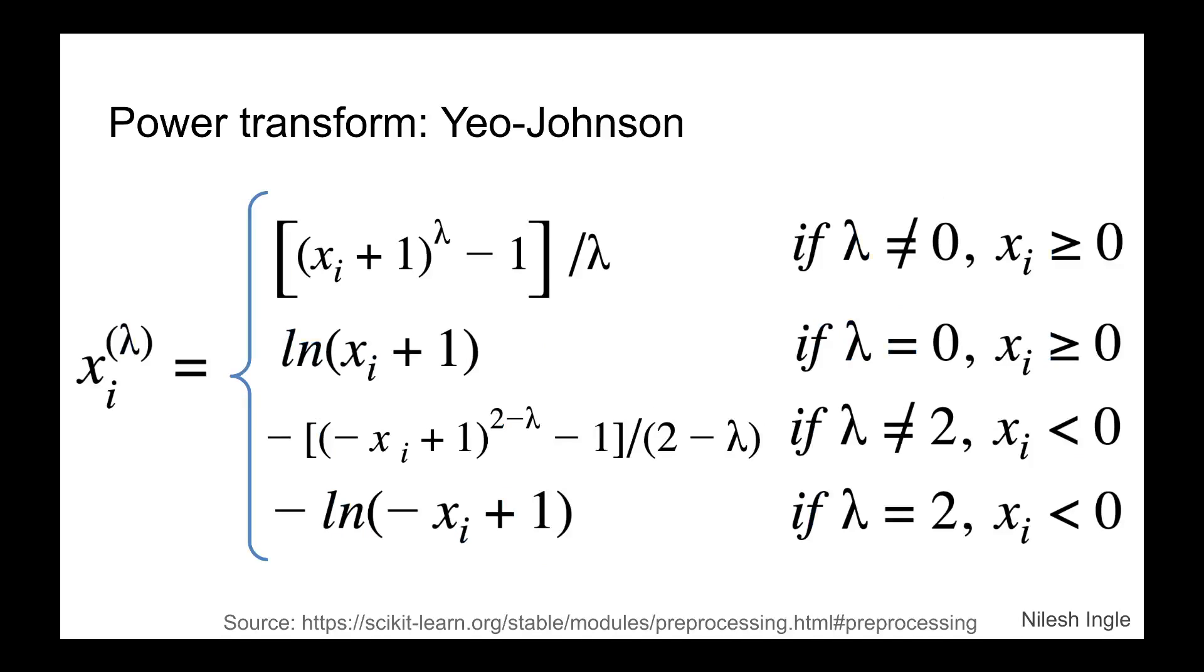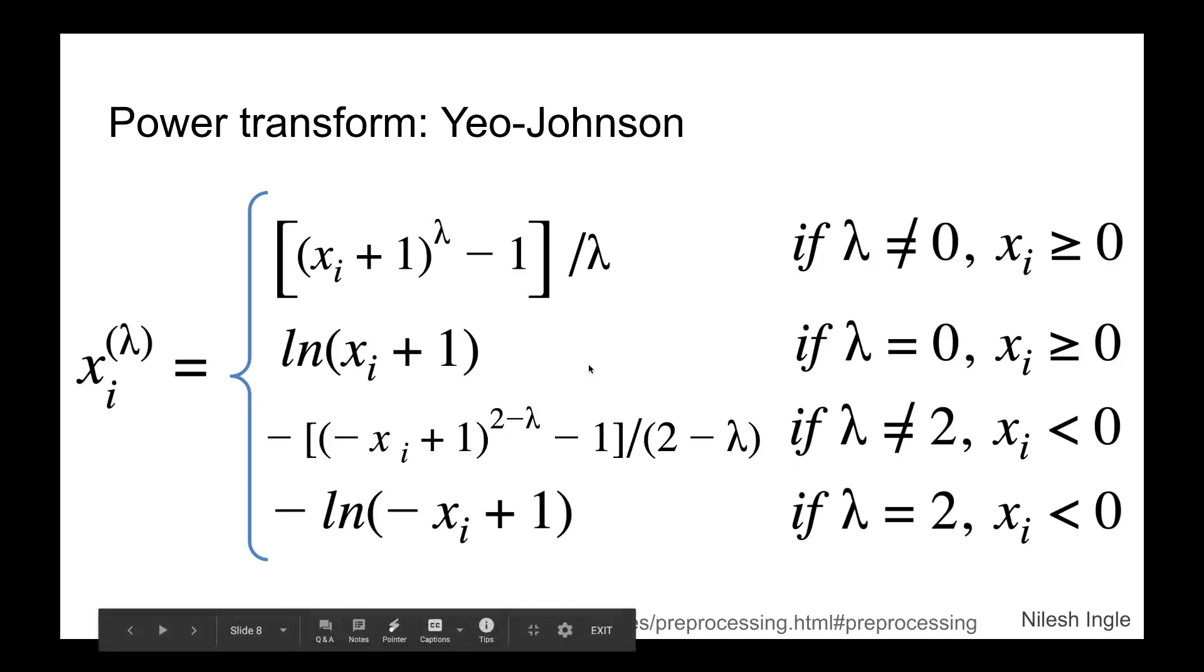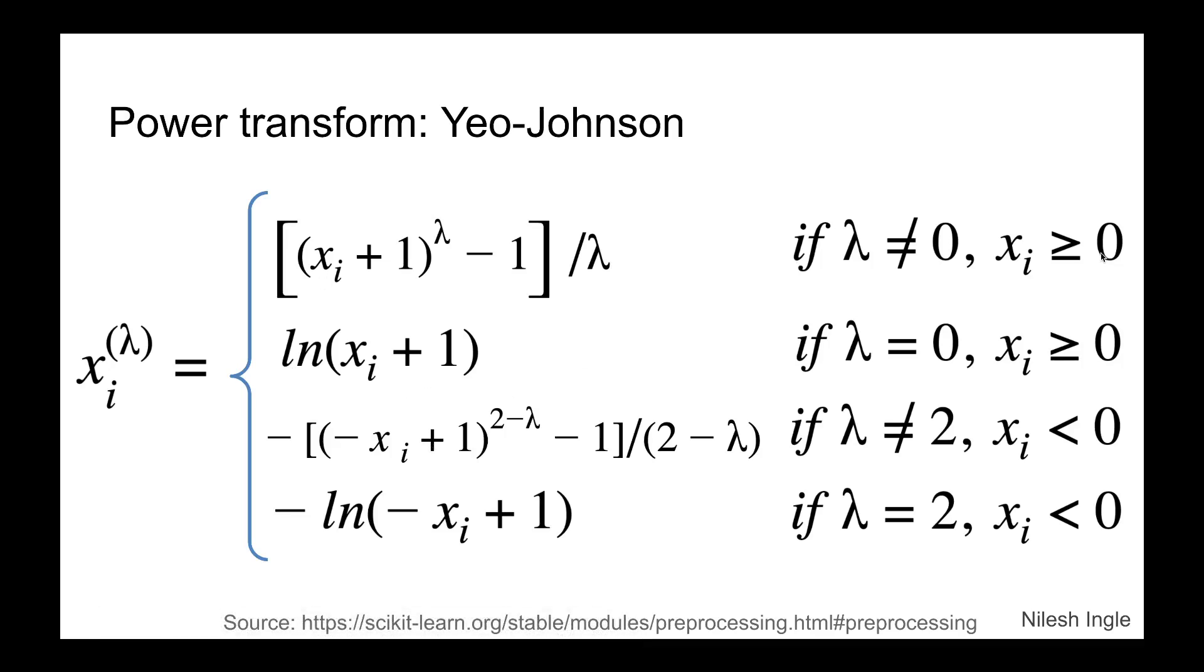Now sklearn library has two main types of power transform. One is Yeo-Johnson and the other one is Box-Cox transformation. And in this transformation there are four different functions that are provided. If the numbers are all positive and equal to zero or greater than zero, and if the lambda value that is used as a power...